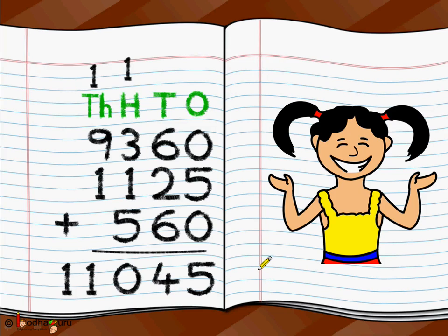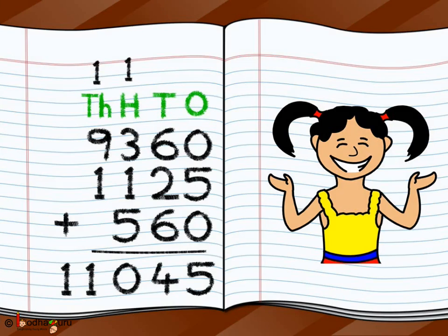So maths is very easy, children. Never get scared of numbers. Just think about the steps, write it down, and the only thing you need to do is single digit addition. Isn't it easy, children? This is all for now. Have fun, bye bye.